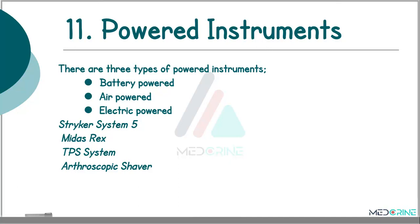Then we have powered instruments, which are of three types: battery-powered instruments, air-powered instruments and electric-powered instruments. Examples include Stryker System 5 instruments, Midas Rex, TPS system and arthroscopic shavers.